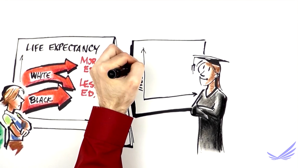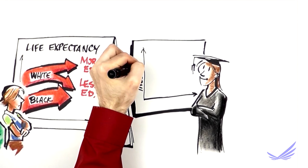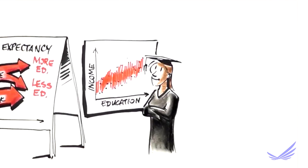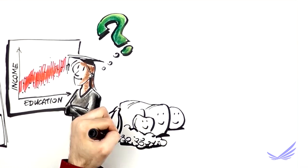More education leads to better paying jobs with benefits like health insurance. But that alone doesn't explain the connection between education and better health. More education and higher earnings means better access to healthy food and safer homes.